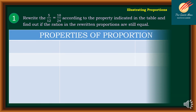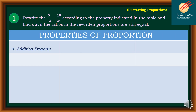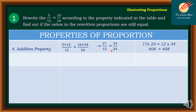Moving on to property number 4, the addition property. We have 5 plus 12 all over 12 is equal to 10 plus 24 all over 24. This is the same as 17 over 12 is equal to 34 over 24. Using the cross-product, 17 times 24 is equal to 12 times 34, giving 408 is equal to 408.